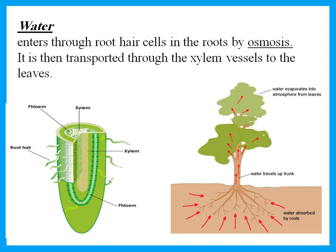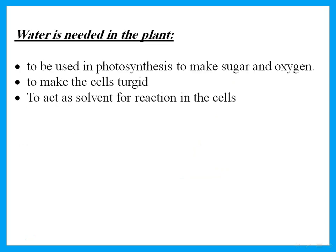How does the leaf get water? Water enters through the root hair cells in the roots by the process of osmosis. The water is absorbed into the roots by osmosis, then goes up through the xylem vessels to the leaves. Water is needed in the plant for several things — using water in photosynthesis to make sugar and oxygen, making the cells turgid and stiff, and it also acts as a solvent for reactions in the cells.